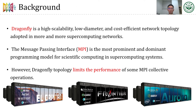Dragonfly is a high-scalability, low-diameter, and cost-efficient network topology adopted in more and more supercomputing networks. As we know, the three new supercomputing systems in the US — Frontier, El Capitan, and Aurora — use Slingshot Interconnect, and Dragonfly Topology is the default topology for slingshot-based systems. MPI is the most prominent and dominant programming model for scientific computing in supercomputing systems. However, we find that Dragonfly Topology will limit the performance of some MPI Collective Operations. Thus, we propose this work to improve them.